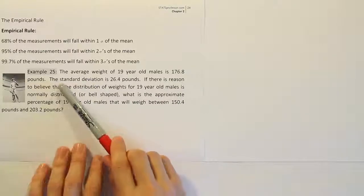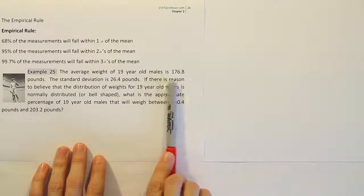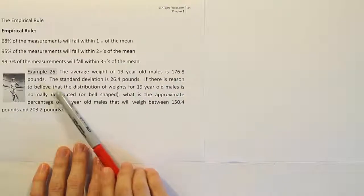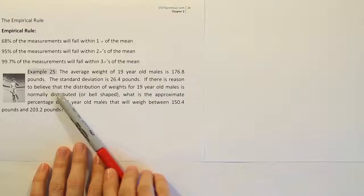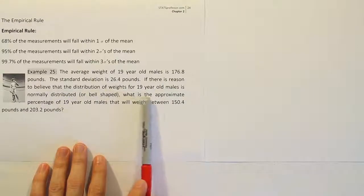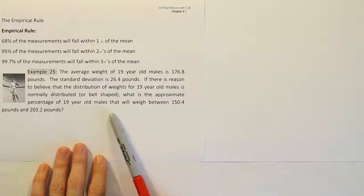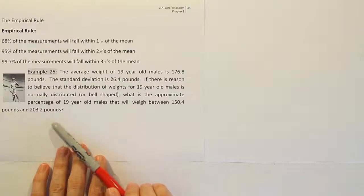All right, example 25. The average weight of 19-year-old males is 176.8 pounds. The standard deviation is 26.4 pounds. If there is reason to believe that the distribution of weights for 19-year-old males is normally distributed, what is the approximate percentage of 19-year-old males that will weigh between 150.4 pounds and 203.2 pounds?